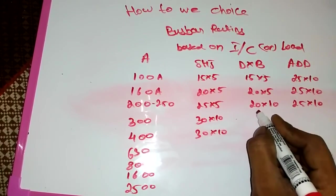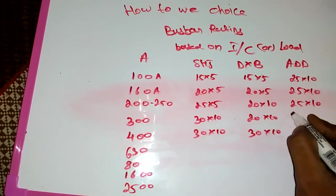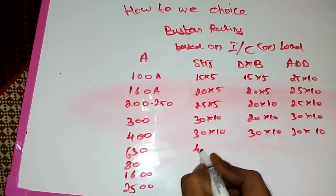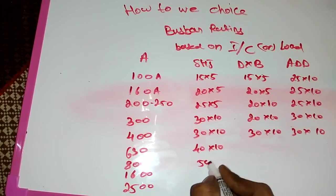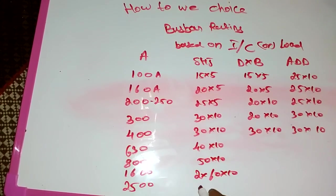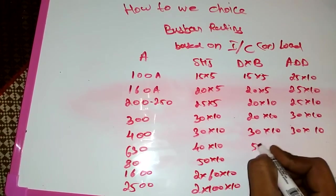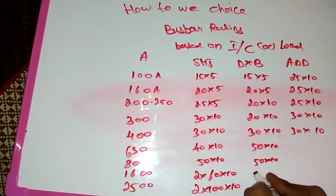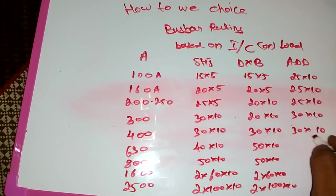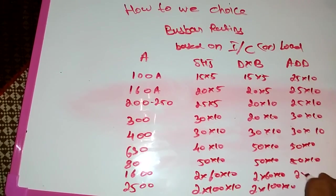Then here 20 by 10, in here 30 by 10, here also 30 by 10, then in 400, here 40 by 10, in here 50 by 10, otherwise here 2 into 60 by 10, in here 2 into 100 by 10. Here 50 by 10, 2 into 60 by 10, 2 into 100 by 10. In here 50 by 10, 2 into 100 by 10.